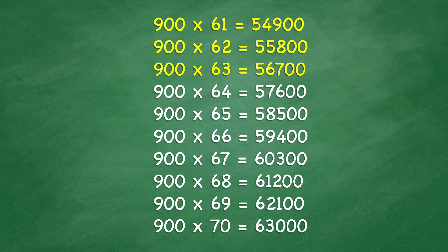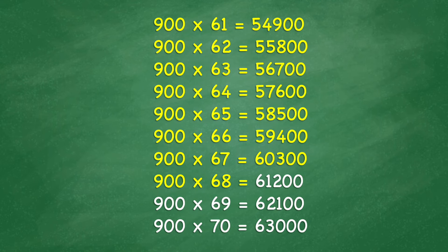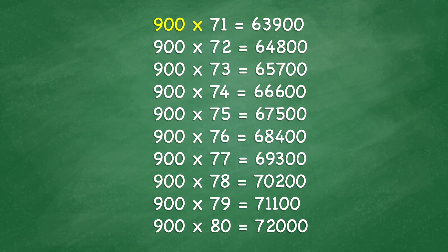900 times 64 equals 57,600. 900 times 65 equals 58,500. 900 times 66 equals 59,400. 900 times 67 equals 60,300. 900 times 68 equals 61,200. 900 times 69 equals 62,100. 900 times 70 equals 63,000. 900 times 71 equals 63,900.